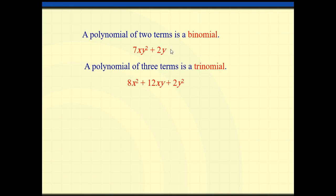Polynomial — if you read the word 'poly,' it means many. When I have just two terms, I call it binomial. Here I have two terms: the first term is 7xy squared, plus 2y. How do we know those are two terms? I need to circle the operations — addition or subtraction. So I have here one operation, plus. So we have two terms. If I look at this other one: this is one term, this is another term, this is a third term — so it's called trinomial.